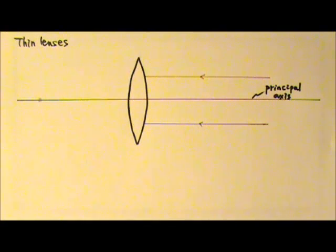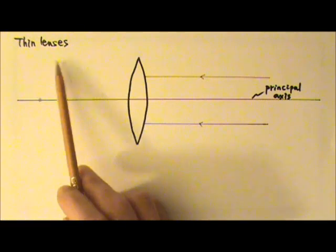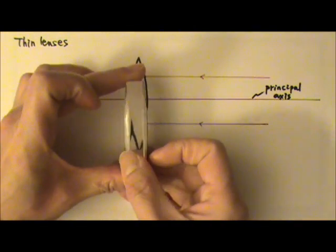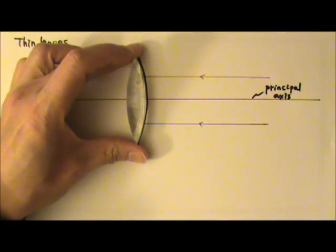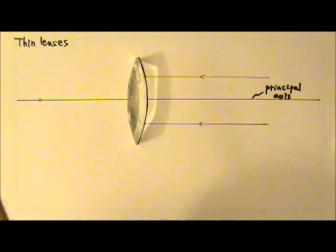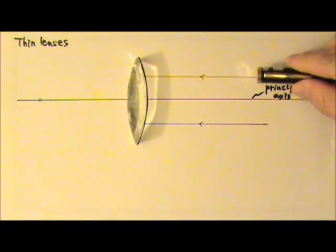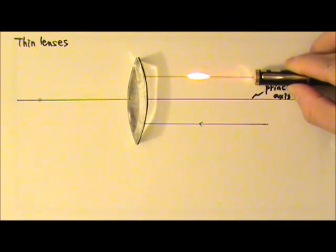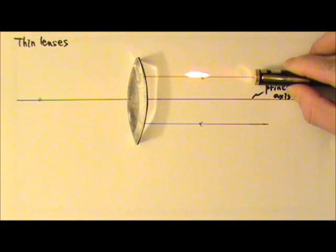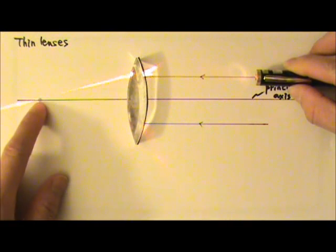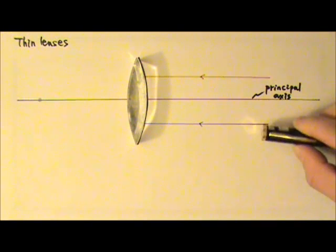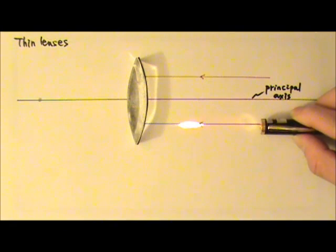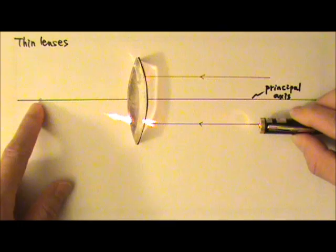In the next few lessons we will be studying thin lenses. We will start with a lens like this one, and this is the principal axis of the lens. I'm going to shine a paraxial ray into the lens — as you can see, this ray gets bent towards the center and goes through this point right here. I'm going to shine another ray that is also a paraxial ray, and this one also gets bent towards the center through that point.